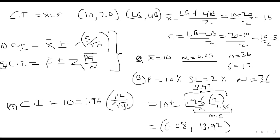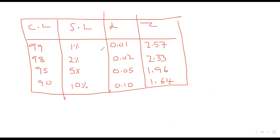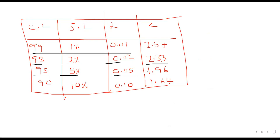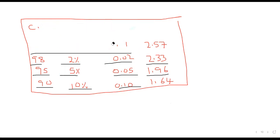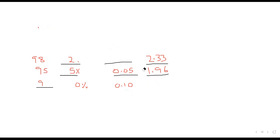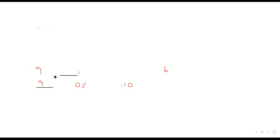Master these values because everything flows from the confidence level. If I give you 99%, 1%, or 0.01 — all point to Z = 2.58. If I give you 98%, 2%, or 0.02 — all point to Z = 2.33. If I give you 95%, 5%, or 0.05 — all point to Z = 1.96. And 90%, 10%, or 0.10 all point to Z = 1.64.